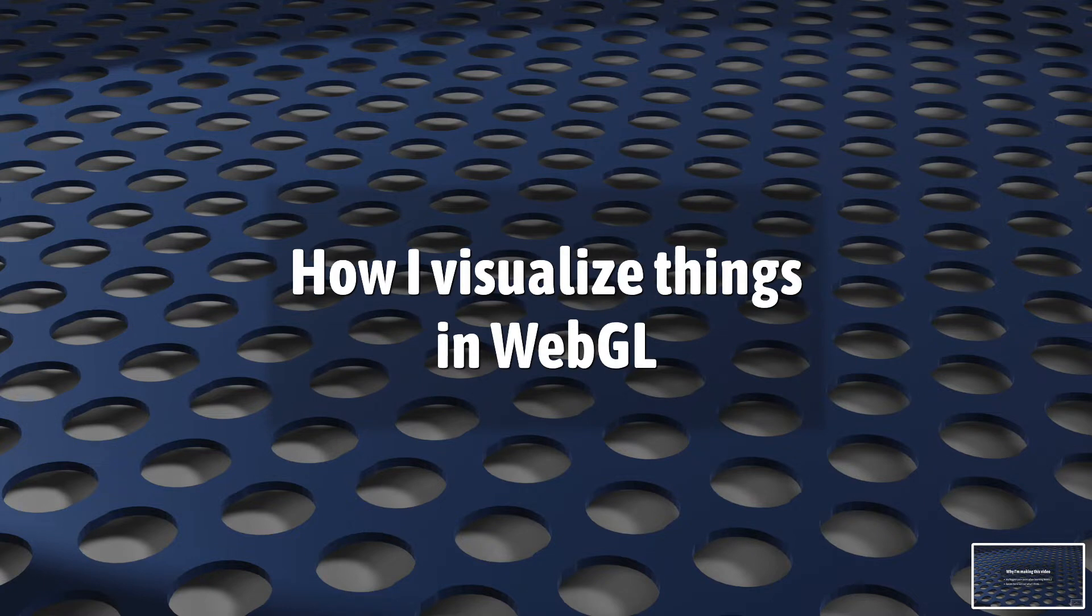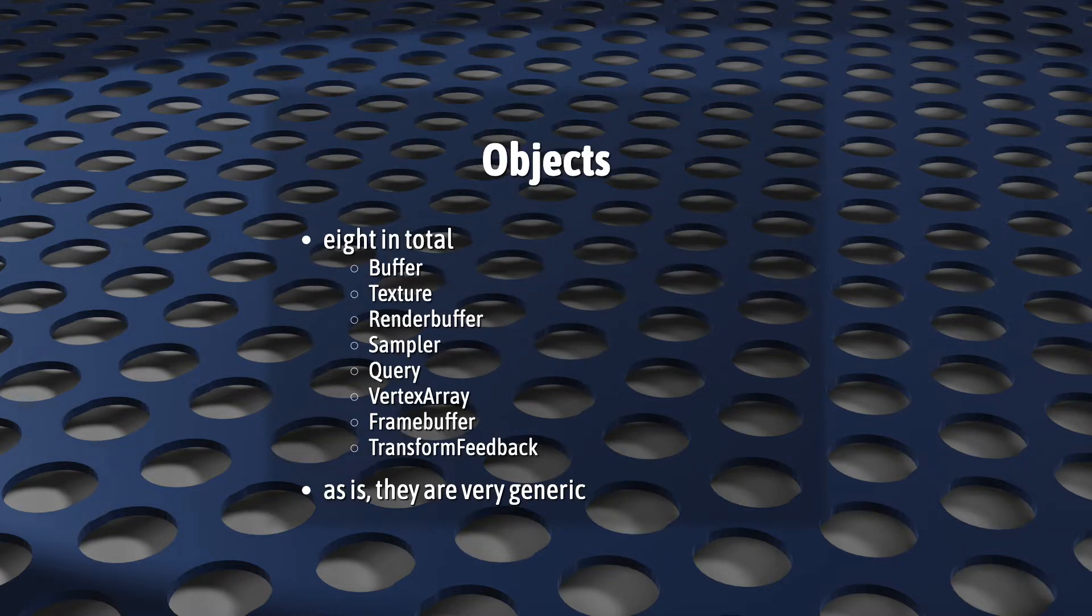Let's begin with an executive overview. Objects. There are eight different WebGL object types. These names describe what each is, and these objects, as is, are very generic.